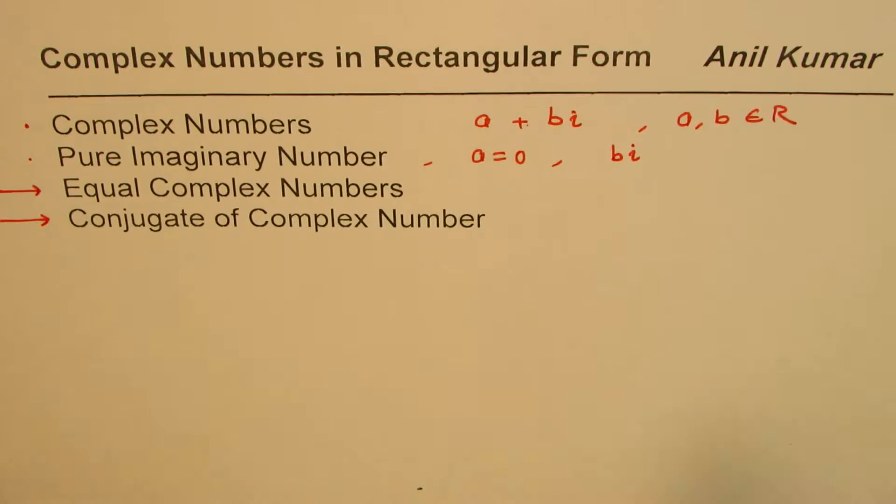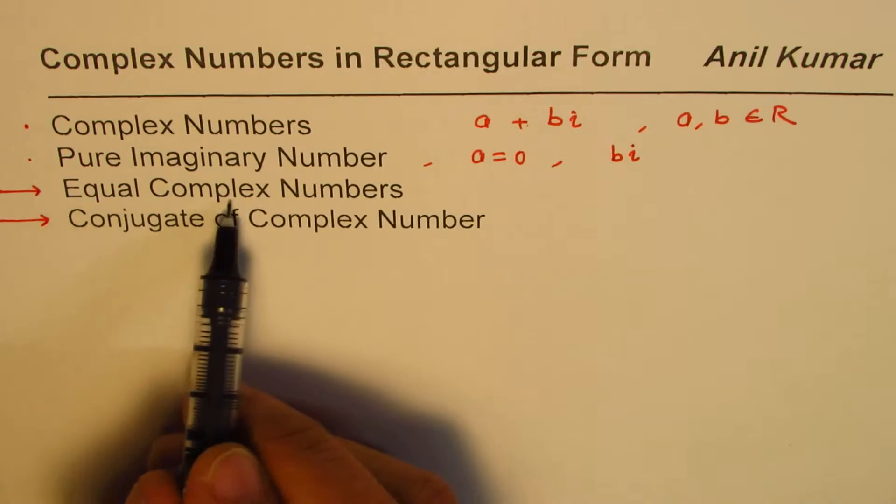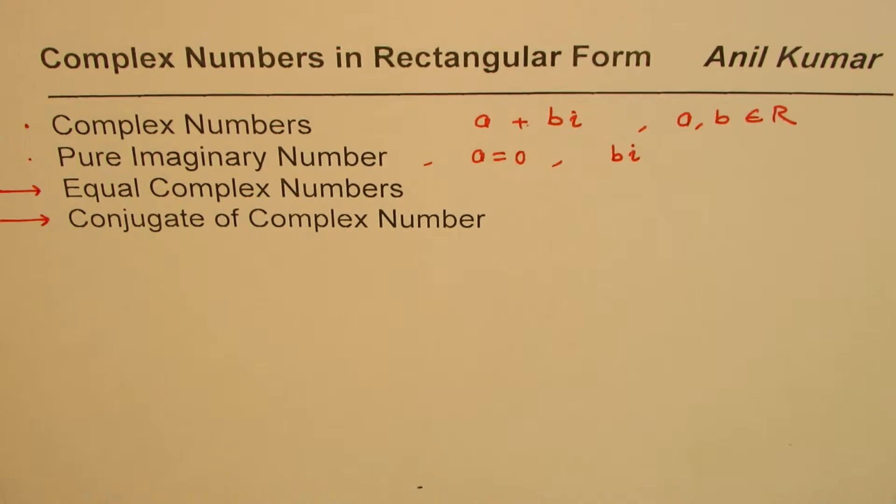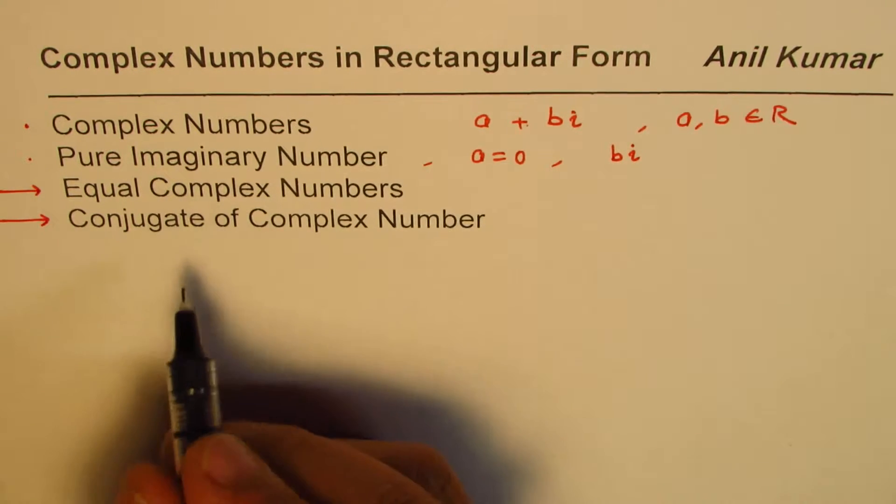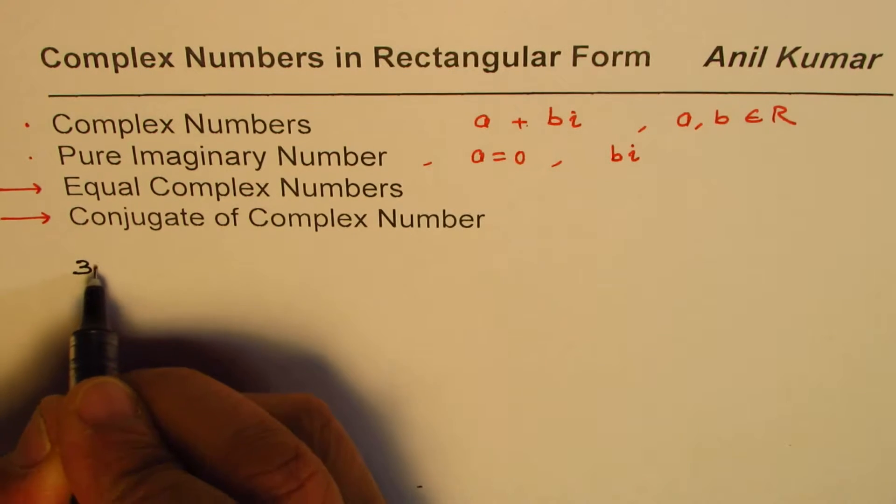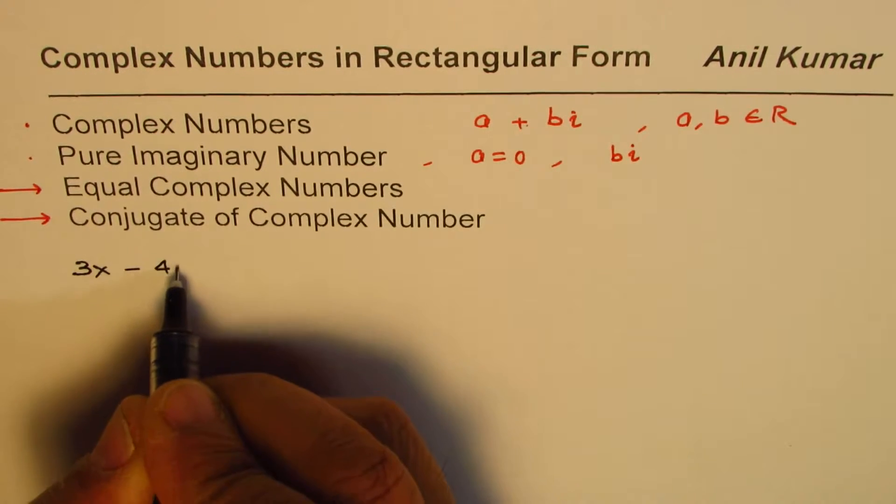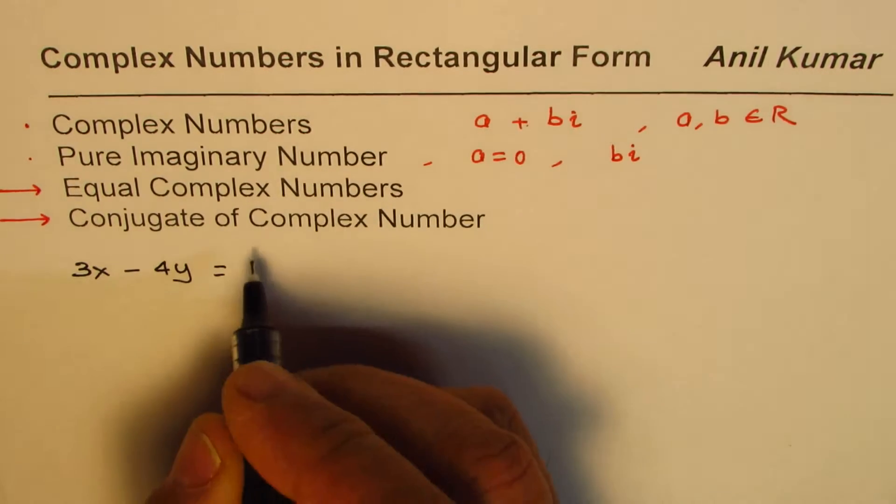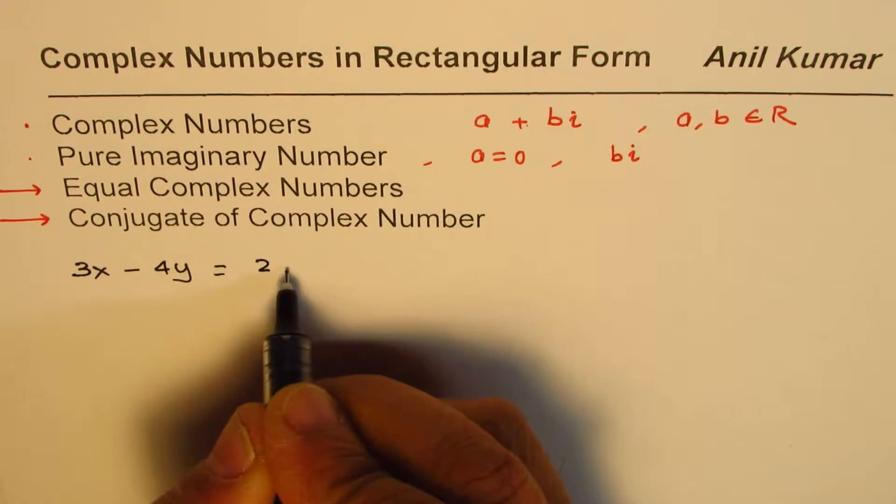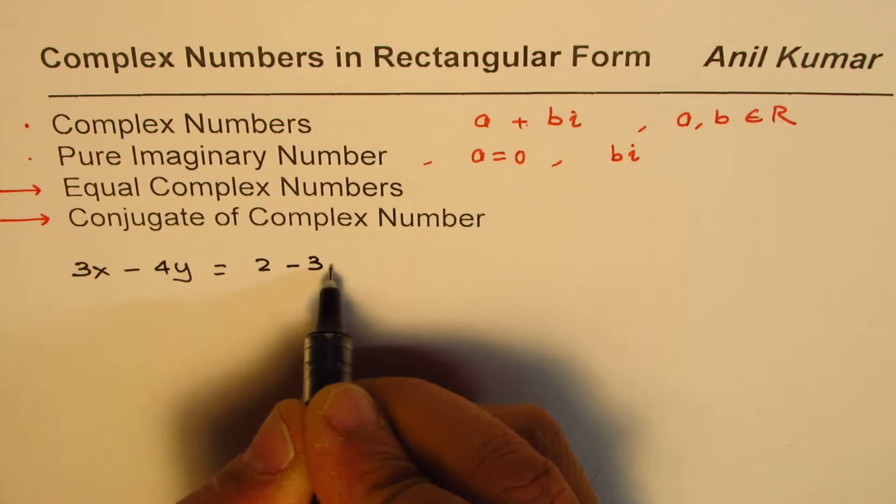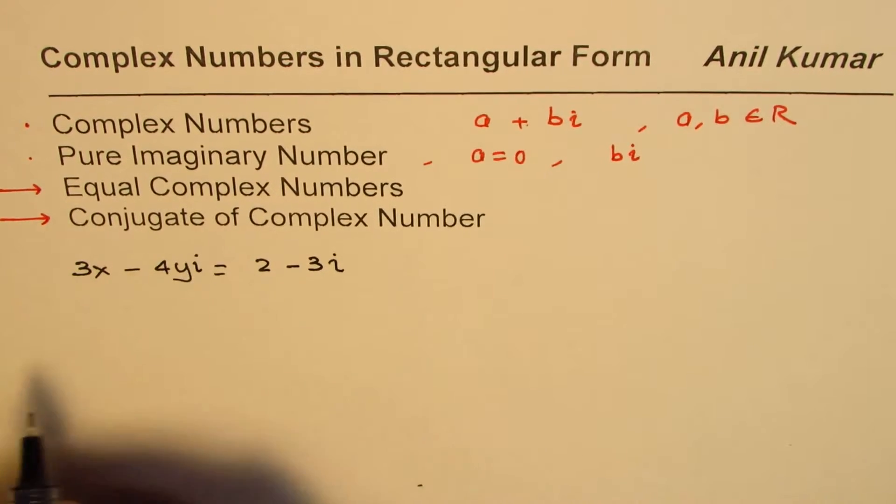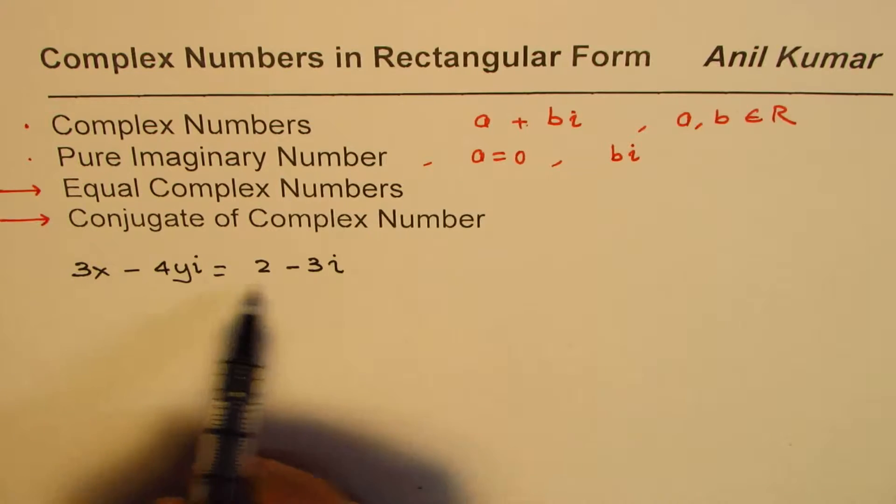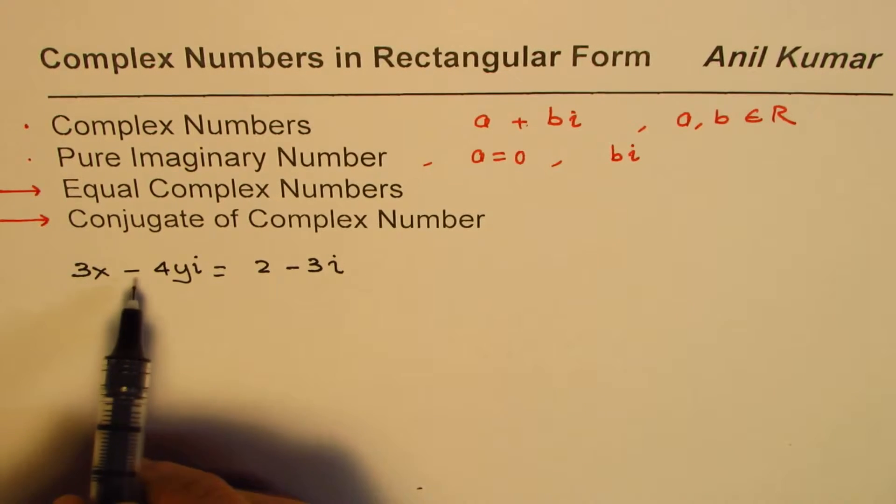Let us take an example and understand when two complex numbers are equal. We'll take up an example. Let's say we write down an equation: 3x minus 4yi equals 2 minus 3i. We have two complex numbers: the first one is 3x minus 4yi, the other one is 2 minus 3i.